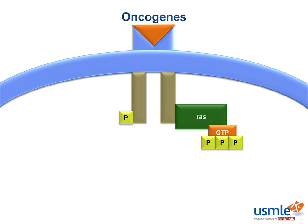They tend to test KRAS particularly on colon cancer. Remember the specific mutation sequence in colon adenocarcinoma: APC first, then KRAS, then P53. The way to remember this is the AK53 mnemonic from the book — APC, KRAS, and P53.